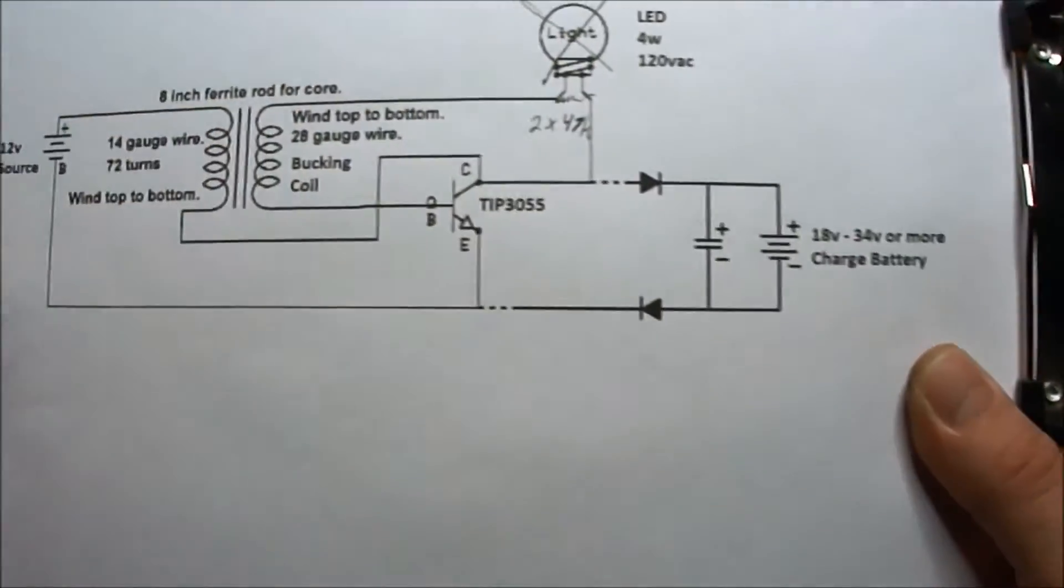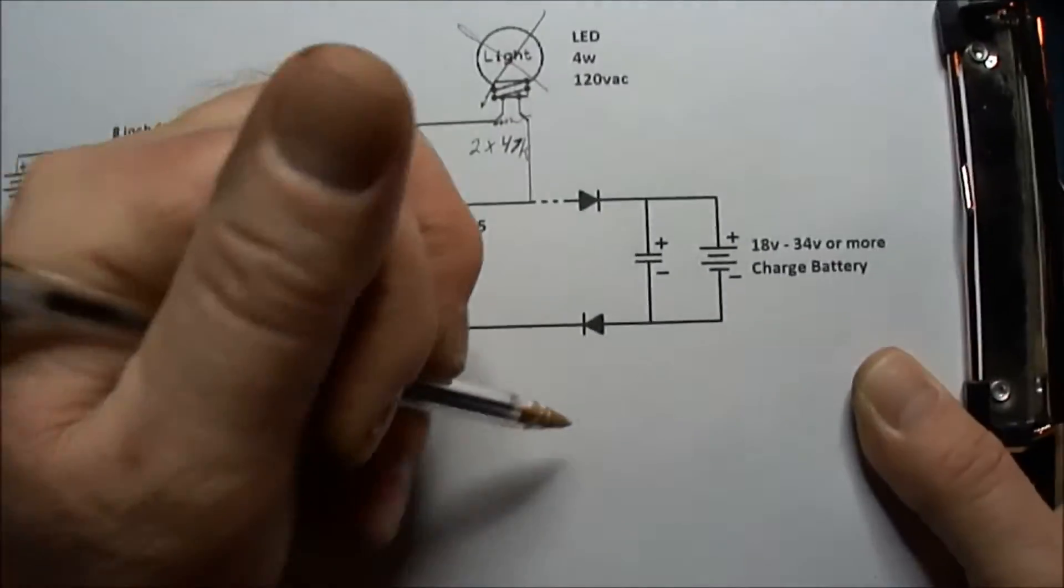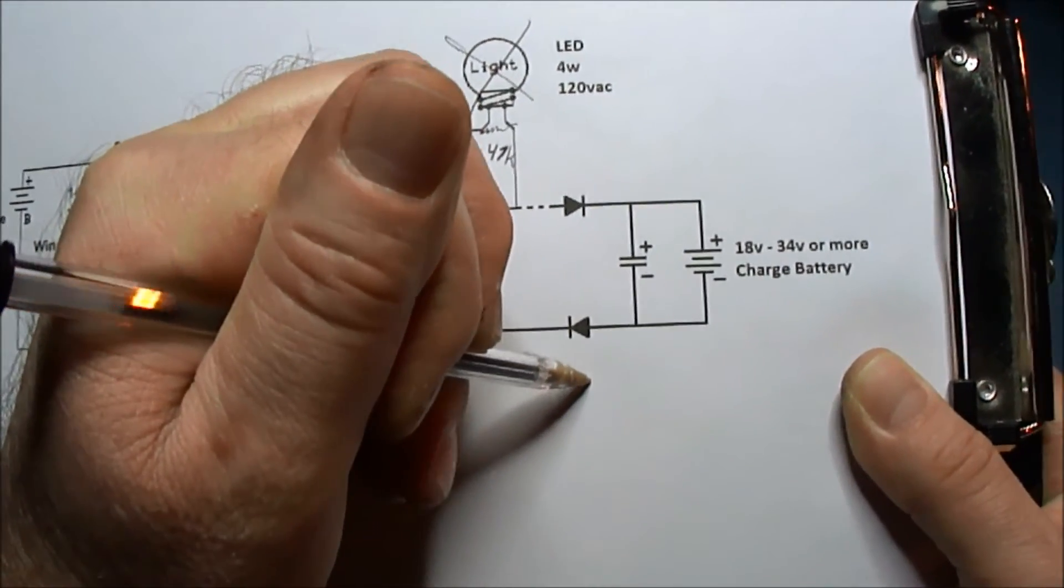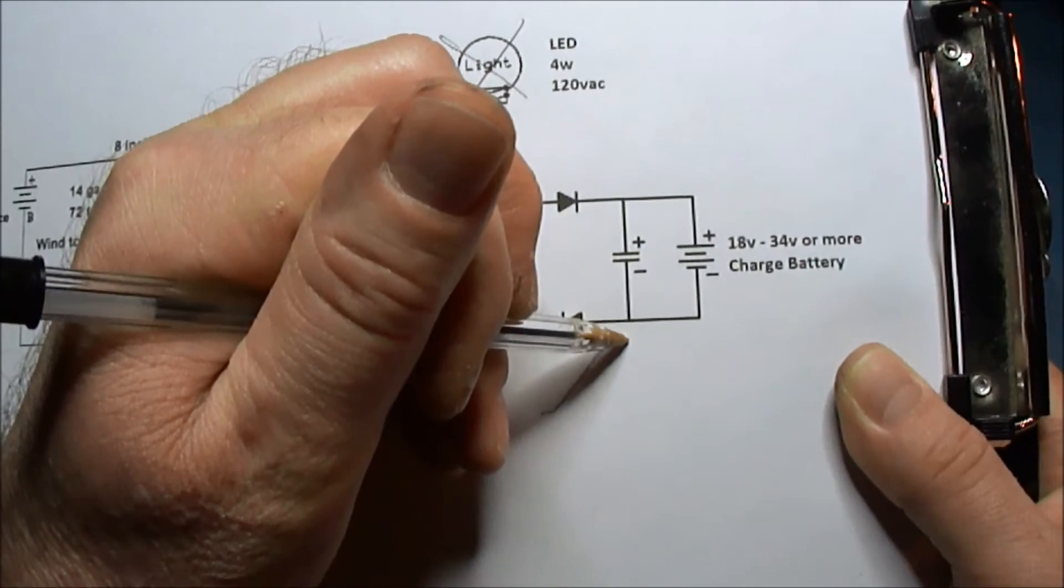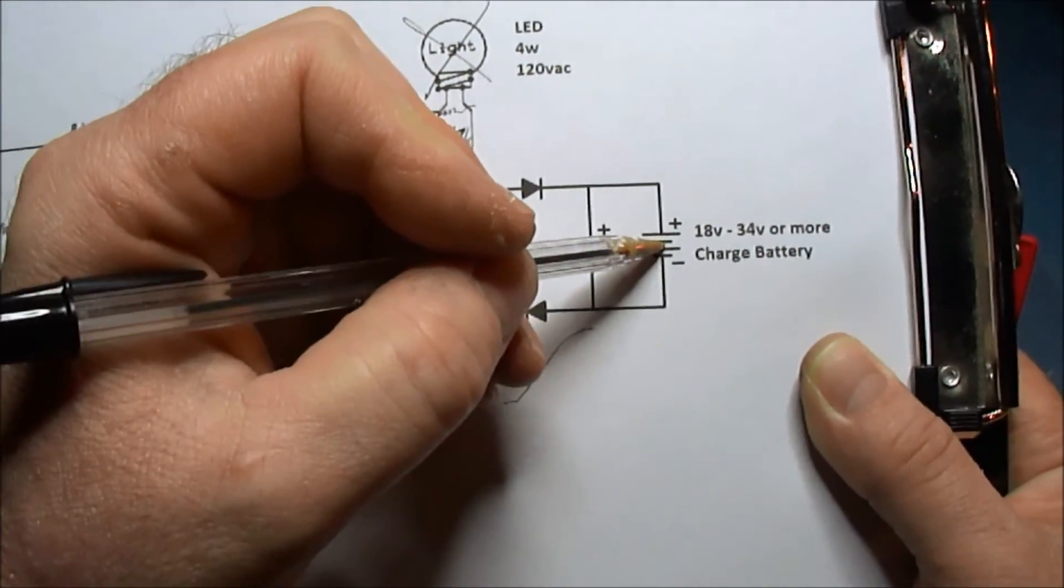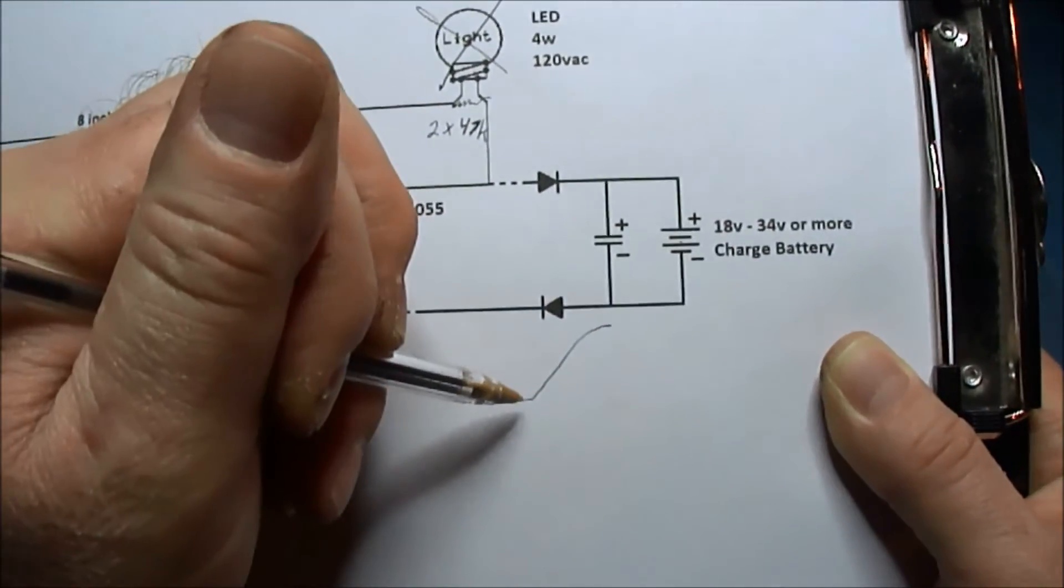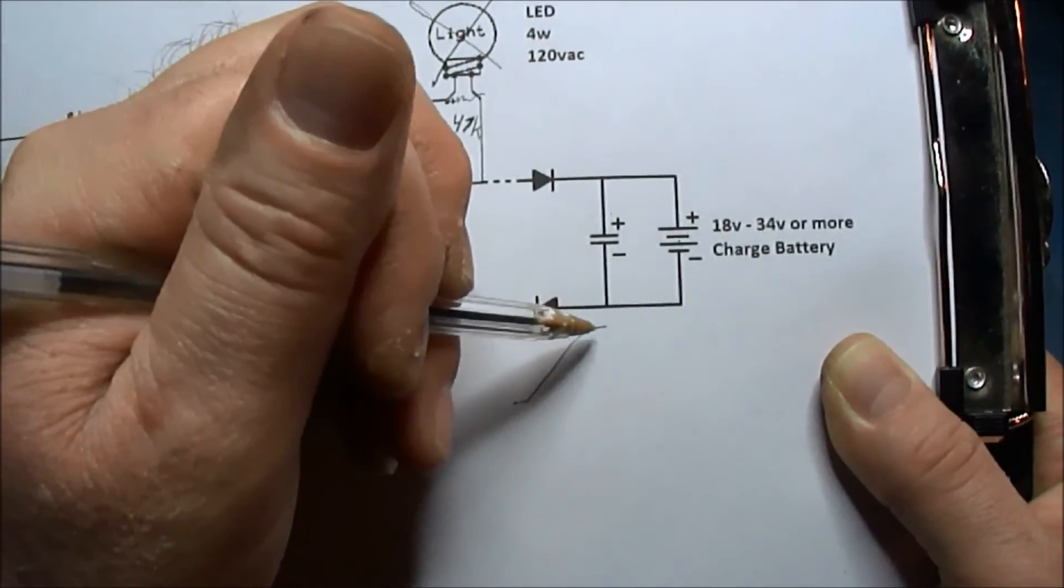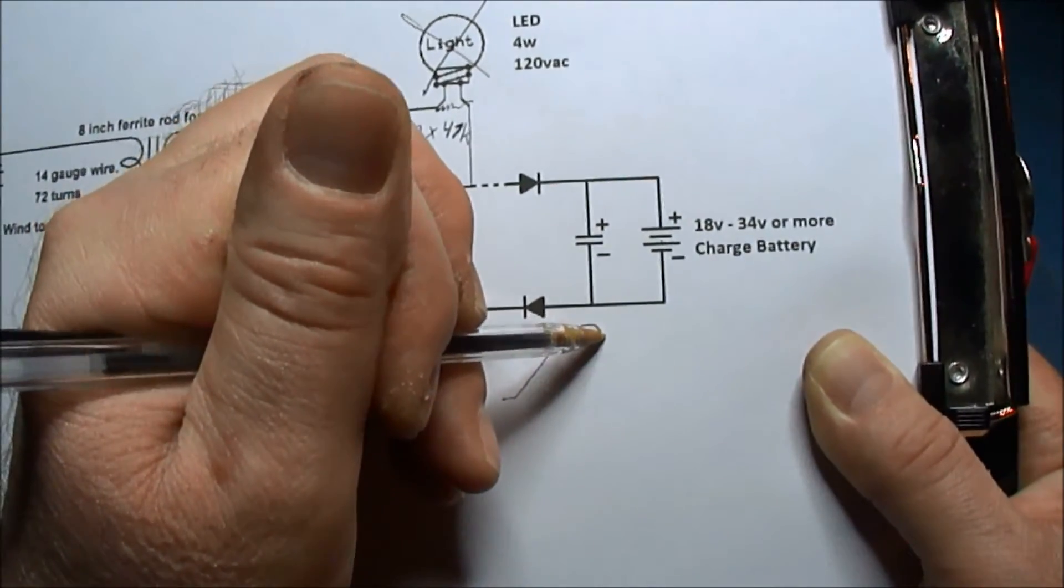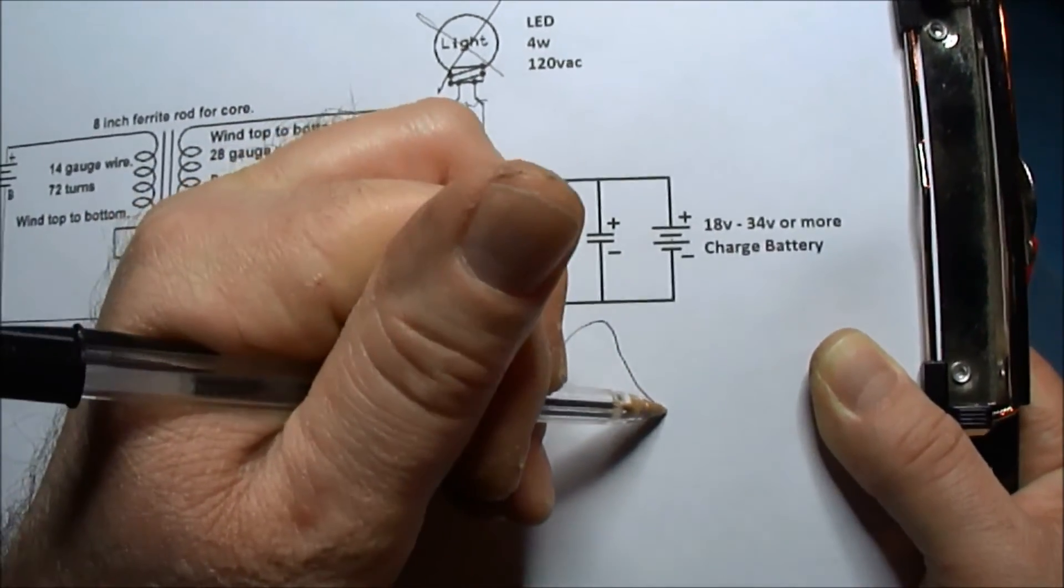So we have our 12 volt source starting out here. And that cap can reach a high potential here, which is much higher than our charge battery. So we're able to bring energy up to a higher state. Now can we capture that energy falling down again?